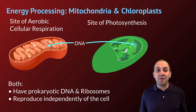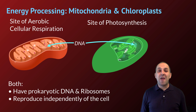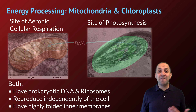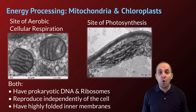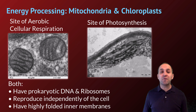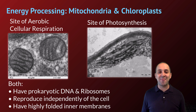Both mitochondria and chloroplasts reproduce independently of the cell, so their reproduction is not tied to cell division. They also both have highly folded inner membranes, visible in these transmission electron micrographs, which are essentially surface area adaptations to maximize the amount of aerobic cellular respiration and photosynthesis they can accomplish.